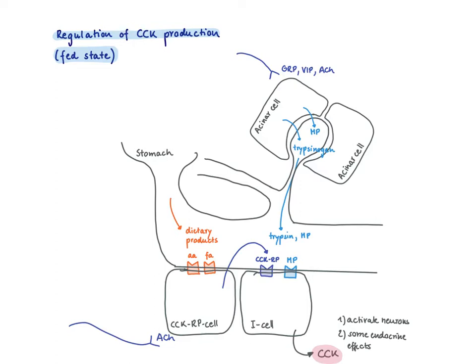There are partly digested food products which contain amino acids or fatty acids, and there are receptors on these cells. Upon stimulation, these cells make the CCK releasing peptide.